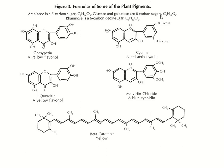Rhamnose is a six-carbon deoxy sugar. Arabinose is a five-carbon sugar. These are some formulas for flower pigments. Beta-carotene structure — how many double bonds? Nine. That you know very well.